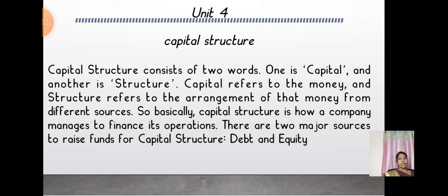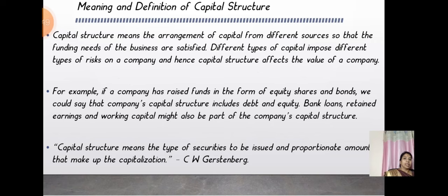Today we are going to discuss the fourth unit and have an overview of capital structure. The term denotes two words: capital, which is money, and structure, which is the arrangement of that money from different sources. Capital structure is how a company manages to finance its operations. There are two major sources to raise funds: one is debt and another is equity. Capital structure affects the value of a company.